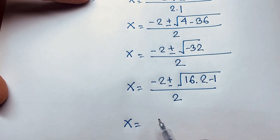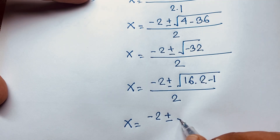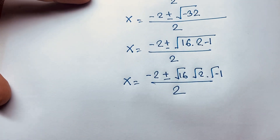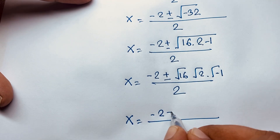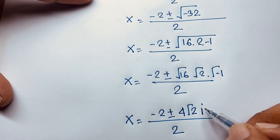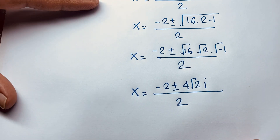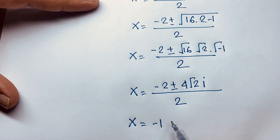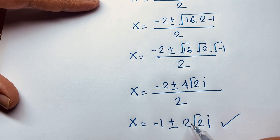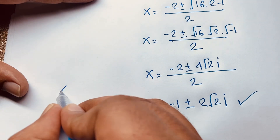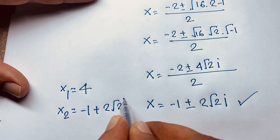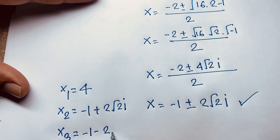Separating: √(minus 32) equals √16 · √2 · √(minus 1), which is 4√2·i. So x equals (minus 2 ± 4√2·i) over 2, giving x equals minus 1 ± 2√2·i. Our three final answers are: x₁ equals 4, x₂ equals minus 1 plus 2√2·i, and x₃ equals minus 1 minus 2√2·i.